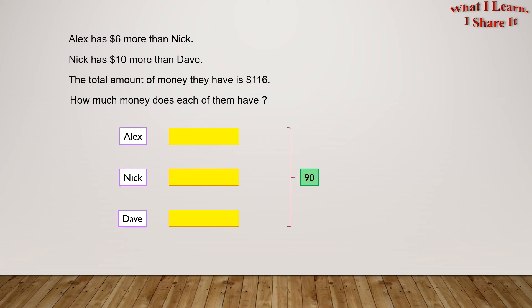We have these three boxes together that make 90. How much will be the value of each of these boxes? Since these boxes are equal, we can use division, right? So, we will have 90 divided by 3 equals 30. So, Dave is 30, Nick is 30, and Alex is also 30.